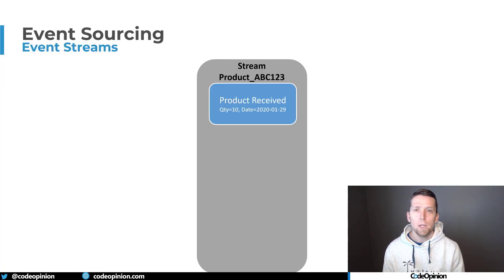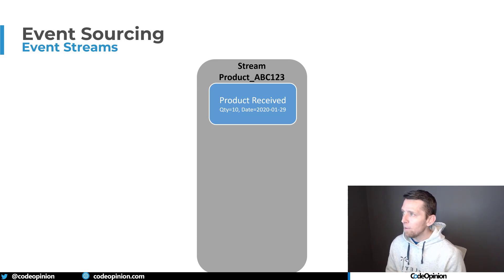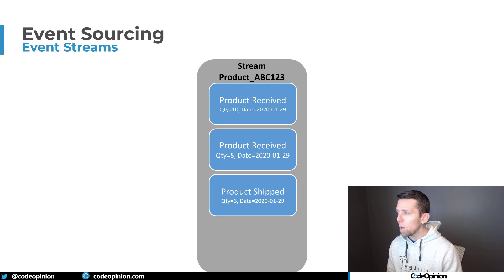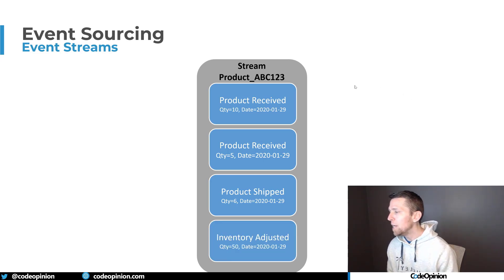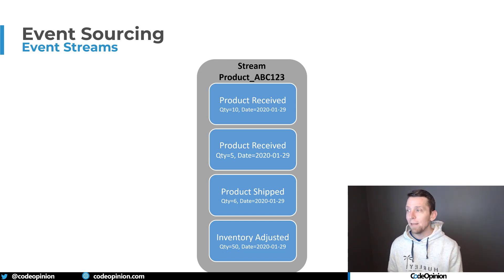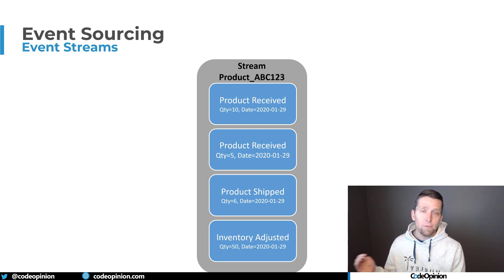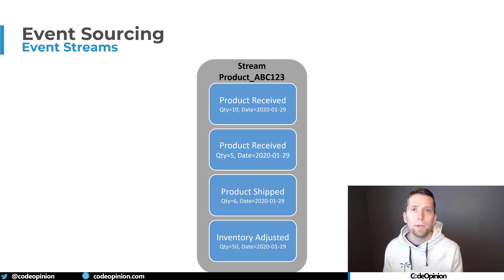The most common question I get related to event sourcing, once people actually understand what it is, is they want to optimize. Here's my example: I have a stream for product ABC-123 and our first event is product received for 10. Then we append another product received for 5 — so now we're at 15. We have product shipped, reducing some quantity, so now we're at 9. Then we do an inventory adjustment of 50, so our current state is 59. When building up an aggregate, it would pull the entire event stream — all events starting at index zero — and go through all of them to get to current state.